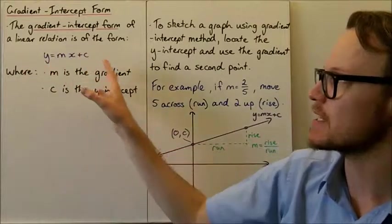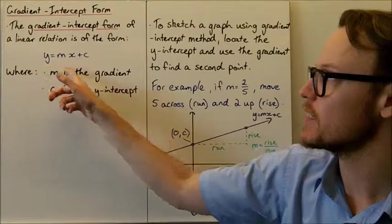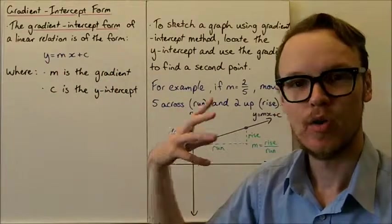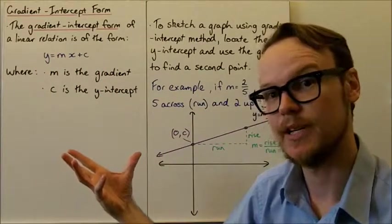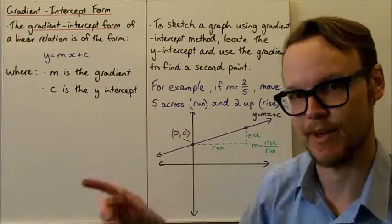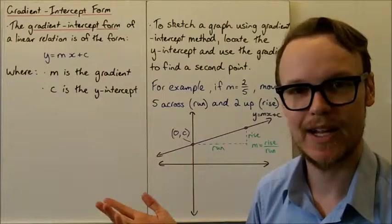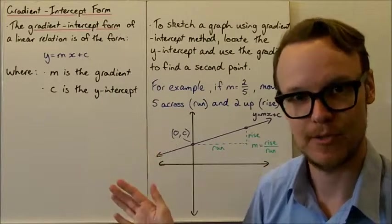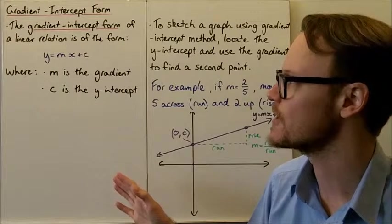We should be able to easily see from a linear relation in this form how steep it is, whether the gradient is positive or negative, whether it's going up or down, and also where our linear relation crosses the y-axis, where the y-intercept is.